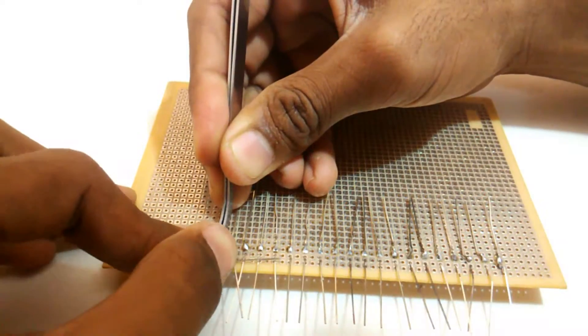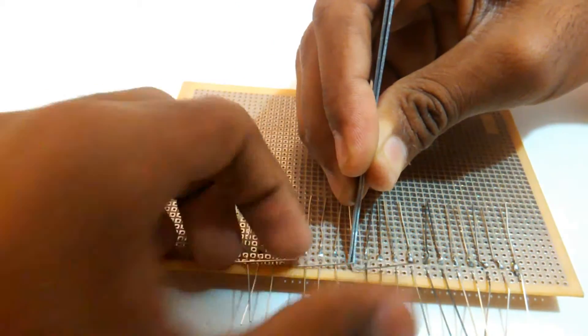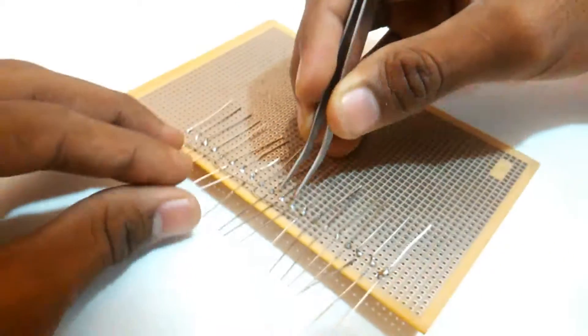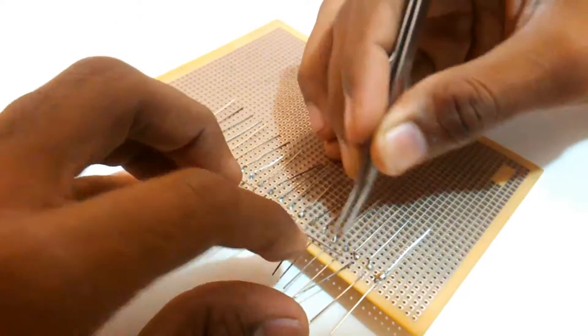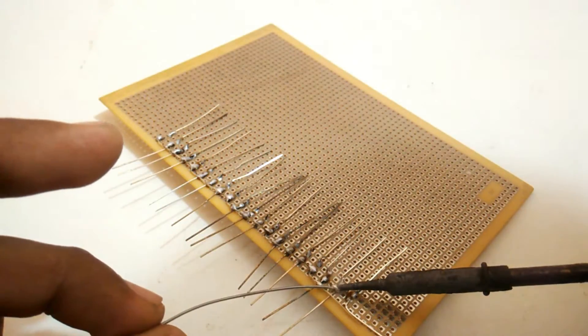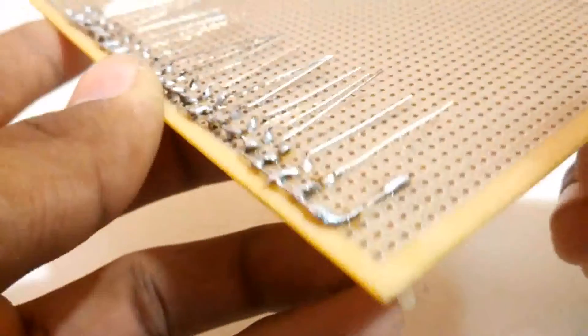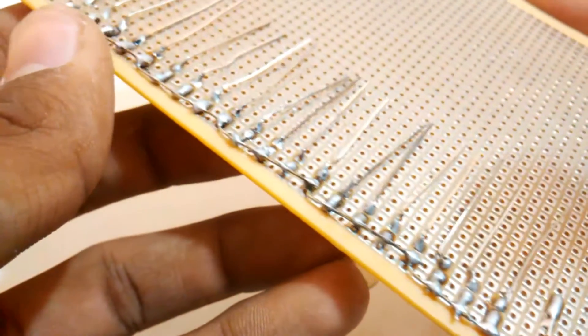Now we can start bending the negative legs of the LEDs. Start by bending the first LED, then leave two or three, then again bend the LEDs as shown here. After that is done, we are going to create a common ground rail from which all the LED grounds should be connected. Make sure you do not short circuit anything.